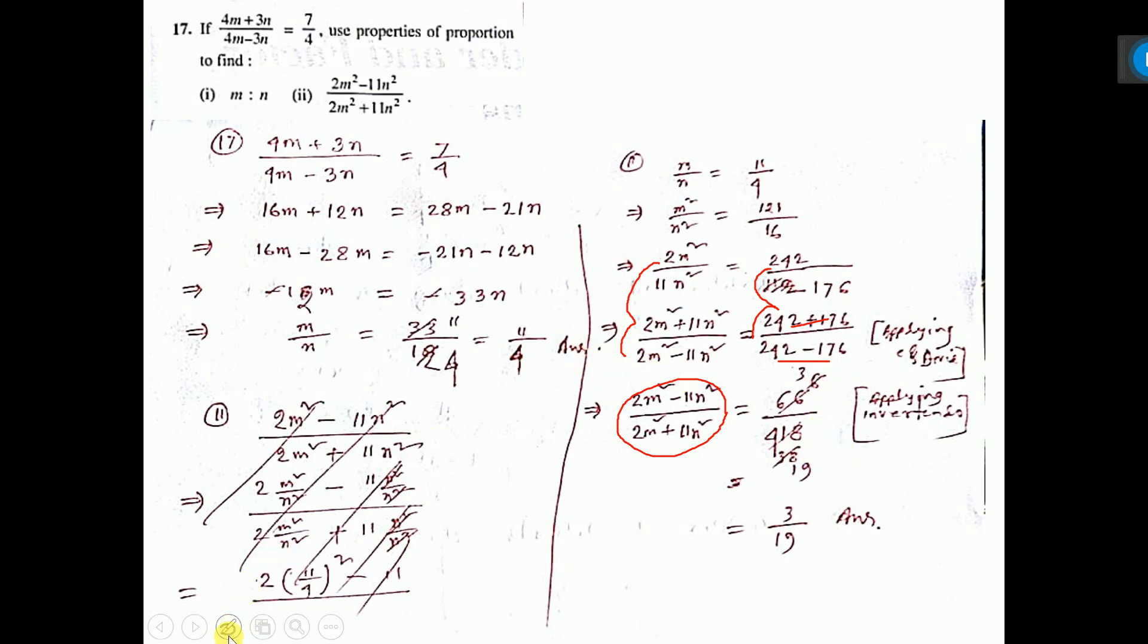One thing I have done here, listen. Here what I did: applying invertendo. That means this denominator I have written in the numerator, and numerator I have written in the denominator. See the proof. That is why, to bring that one.